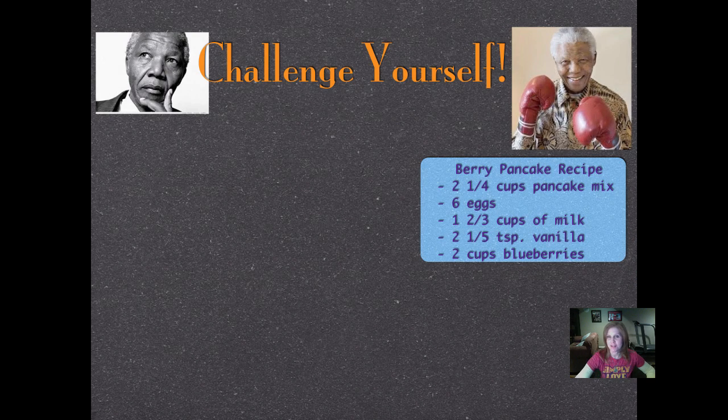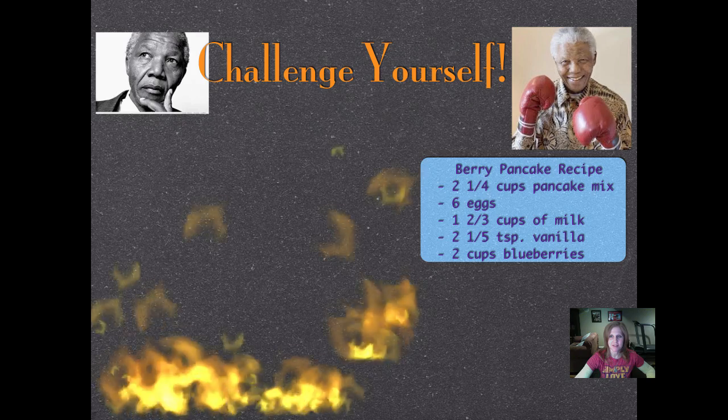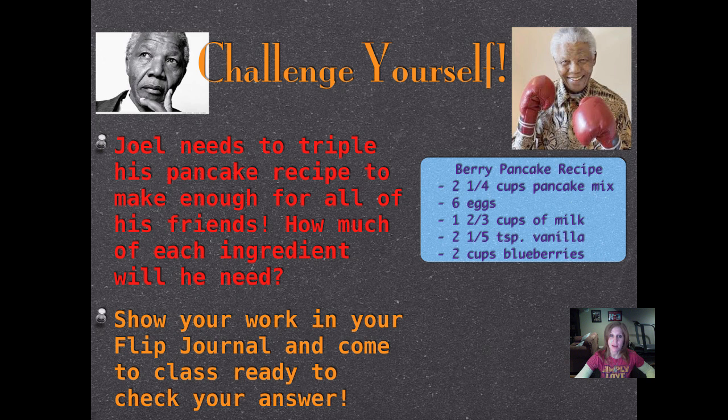It's time to challenge yourself. There's Nelson Mandela. He's ready to challenge you too, but not to boxing, to math. We're going to use that berry pancake recipe. Joel needs to triple, remember triple means three times, his pancake recipe to make enough for all of his friends. How much of each ingredient will he need? There's the recipe right there on your screen. You'll have to pause it and write that down and then triple all of those amounts. Make sure you come back to class ready to check your answer and write down all your notes in your flip journal.